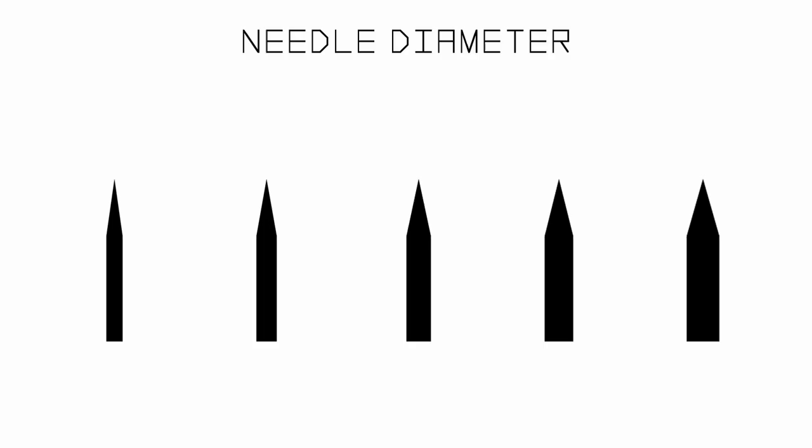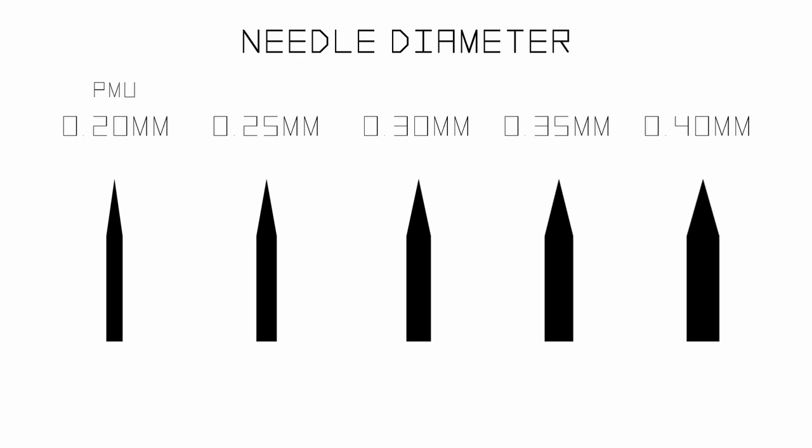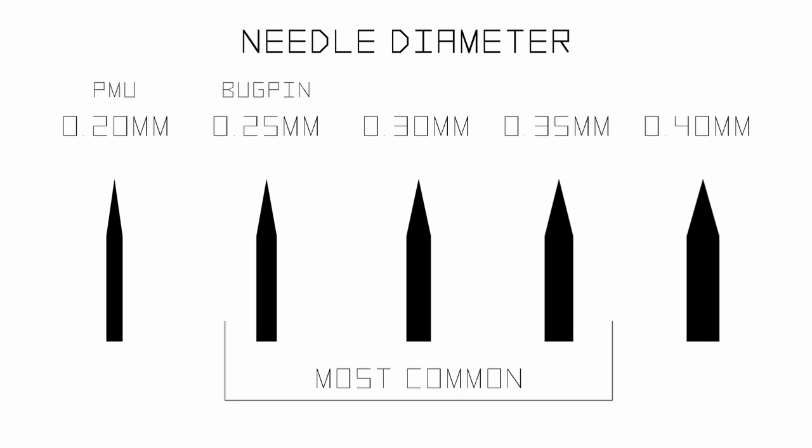Next we have needle diameter, which refers to the diameter of each individual needle tip. Needle diameters can range from 0.20mm, typically used for cosmetic tattoos, to 0.35mm or even 0.40mm in some cases. 0.25mm needles are sometimes also called bug pin needles. Needle diameter mainly comes down to personal preference or style, but I recommend starting with 0.35mm and experimenting with different diameters as you gain more experience.